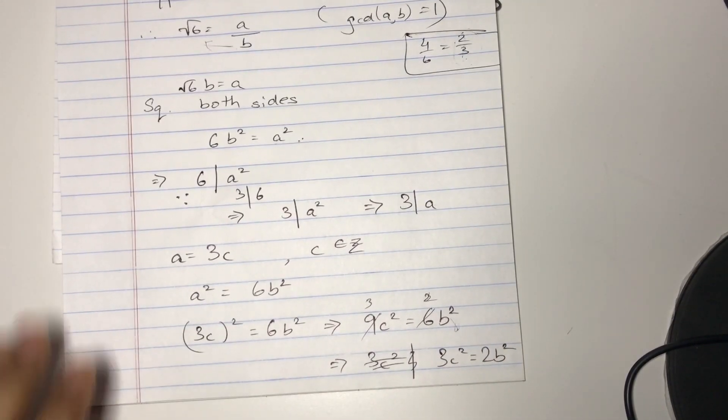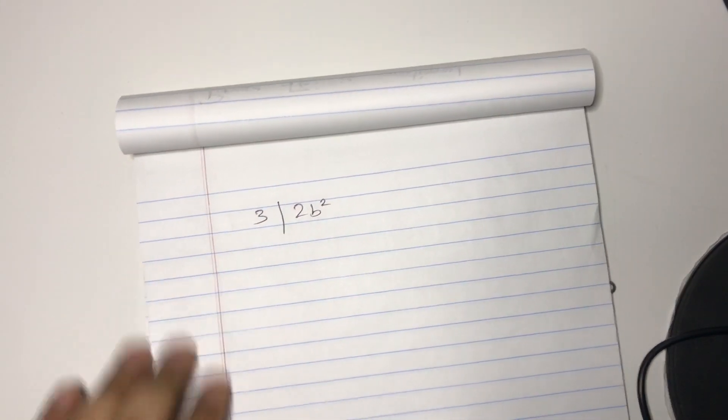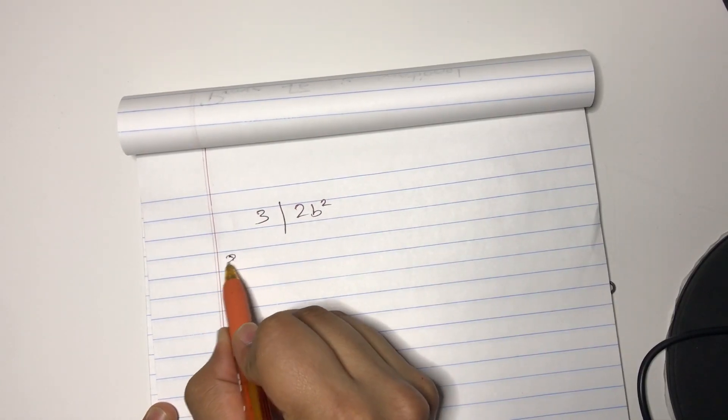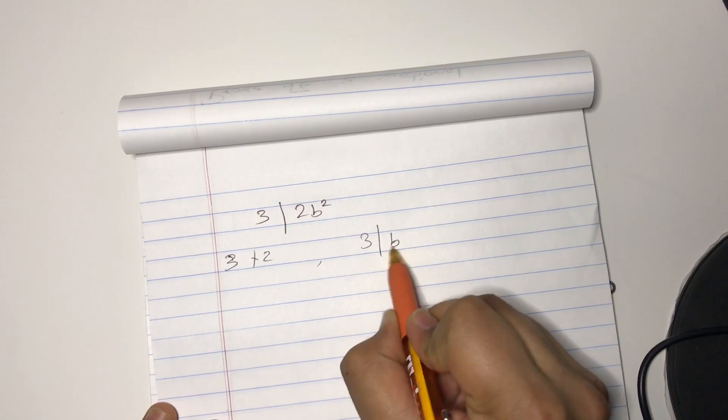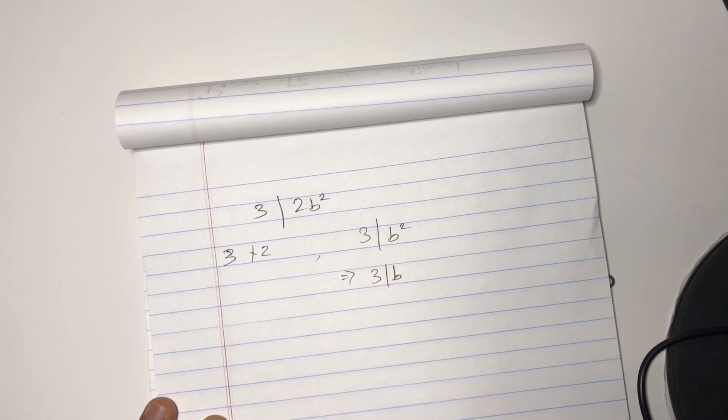Good until now. Therefore, we have 3 divides 2B², right, from the previous page. And obviously, 3 does not divide 2, so 3 divides B². And effectively, 3 divides B.